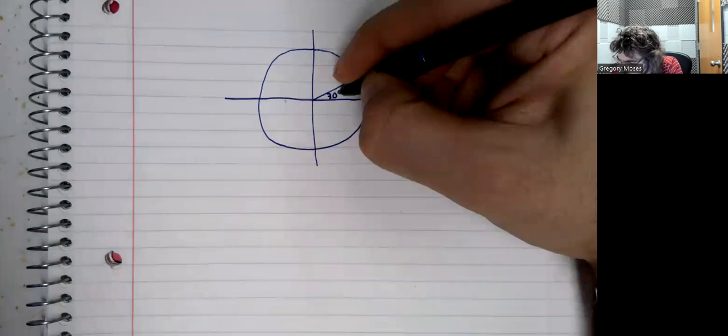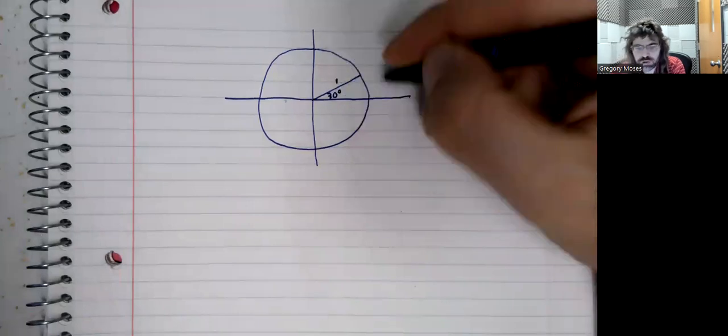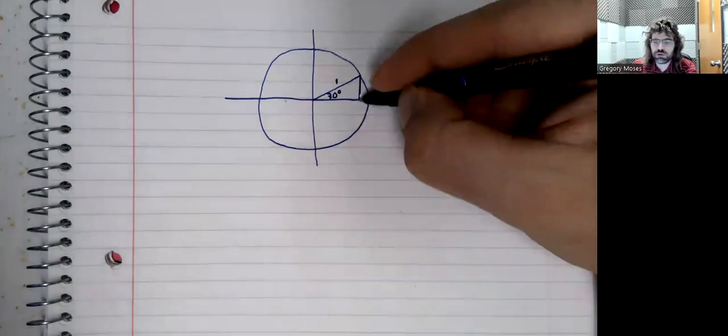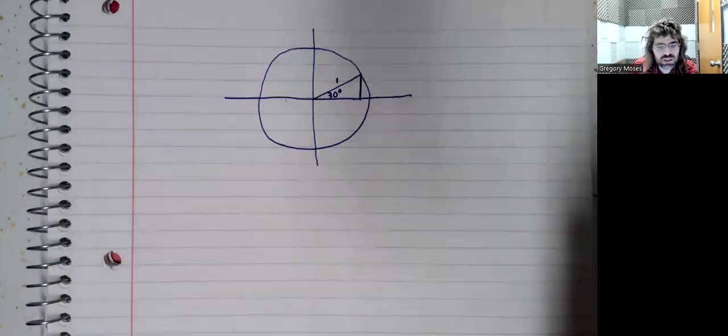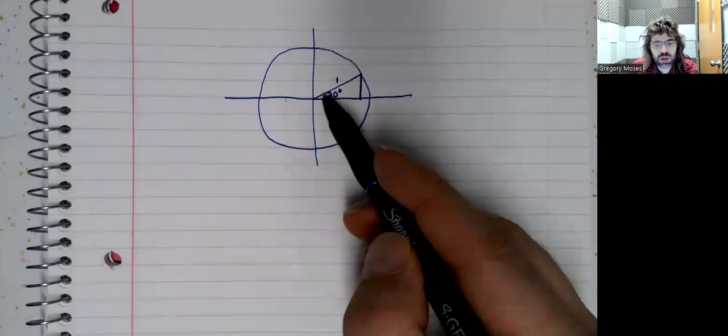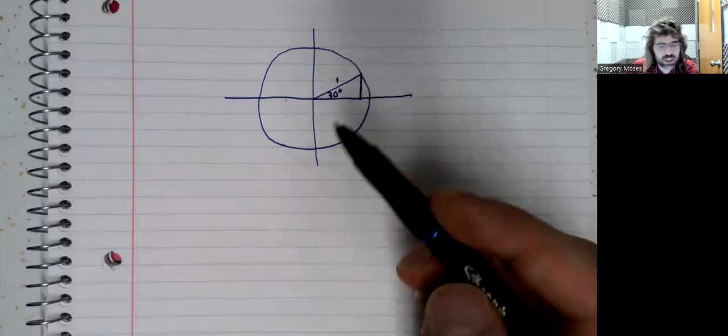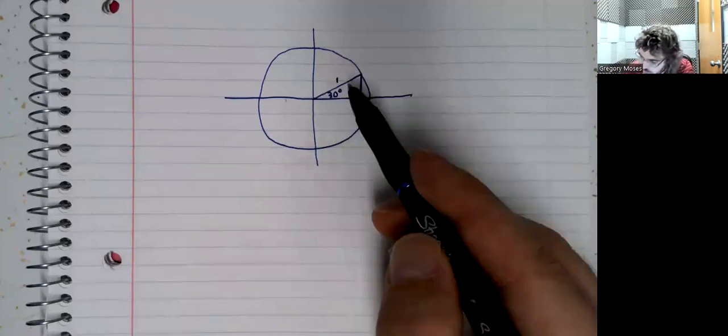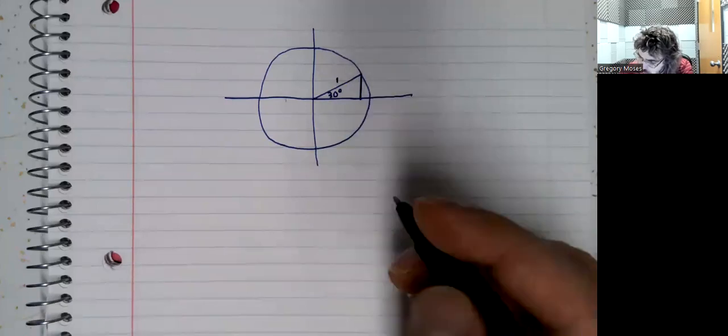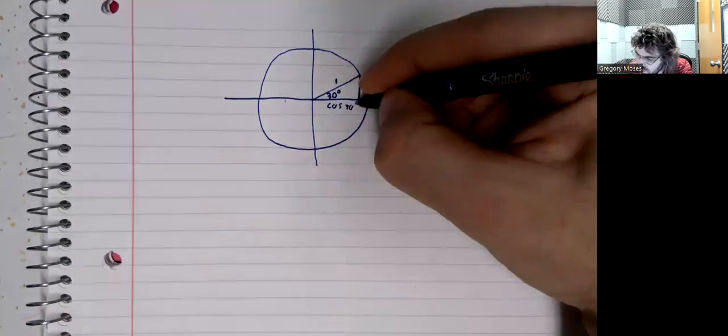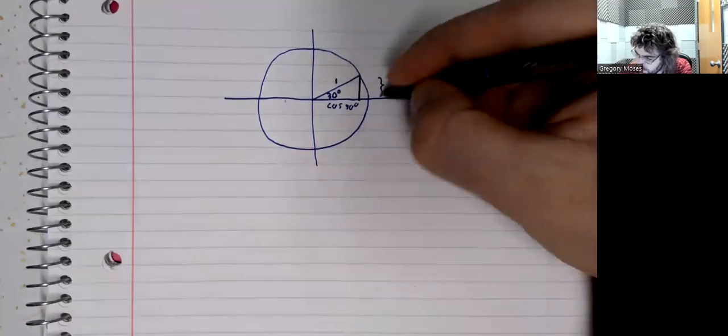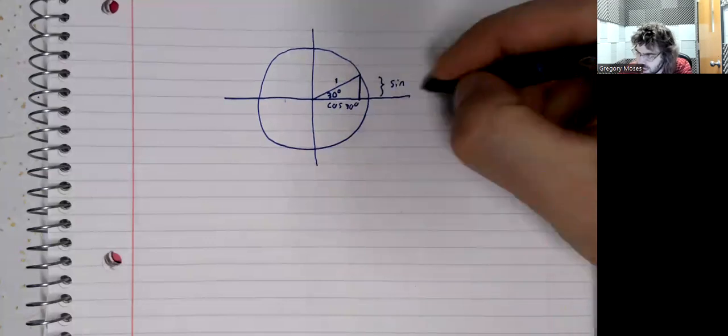Just as we did when we were looking at 45 degrees, we're going to create a right triangle. And we'll observe that because this is the unit circle, the hypotenuse of this triangle is 1. And this horizontal distance is the cosine, and this vertical distance is the sine.